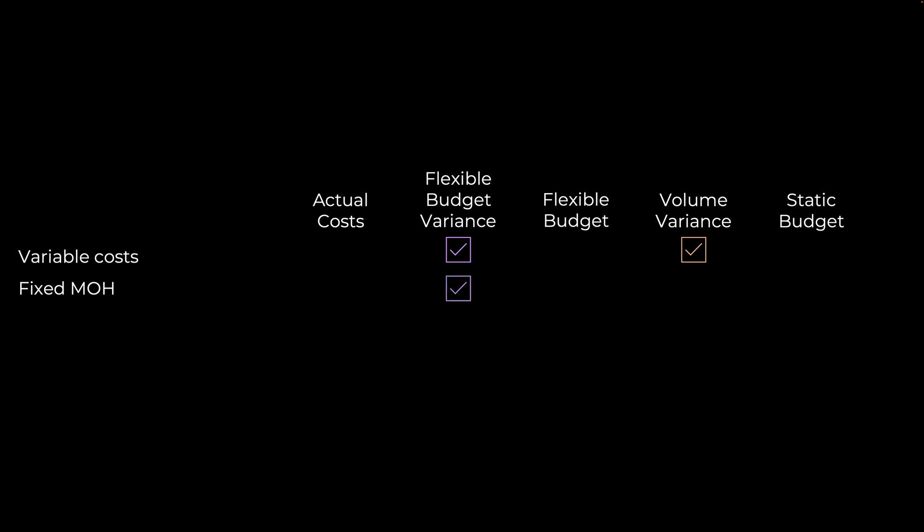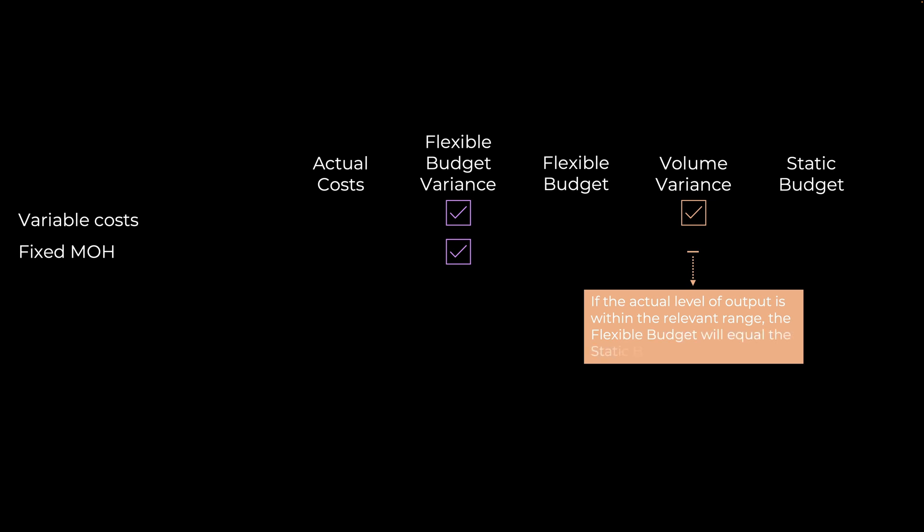What we haven't spent much time talking about are fixed items such as fixed manufacturing overhead. This will also have a flexible budget variance, but it will not have a volume variance. If the actual level of output is within the relevant range, the flexible budget will equal the static budget for fixed costs. For example, if you assume 12,000 units for the static budget but only 10,000 units are made and sold, and it's within the relevant range, you would have budgeted likely the same amount under either scenario.